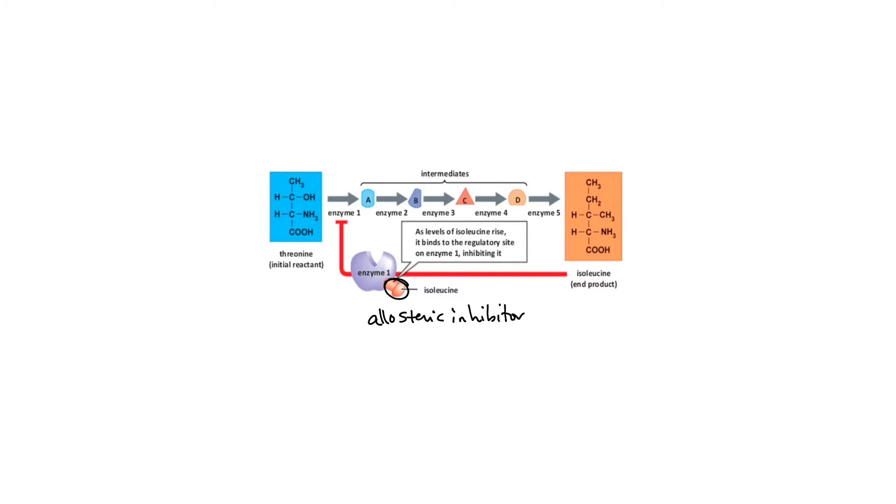So, when there's sufficient isoleucine that has been produced by this pathway, it can come back and act on enzyme one, so that now threonine won't be able to be turned into the intermediate A. Since isoleucine is an end product of this pathway, we actually call this feedback inhibition. So, it's not just allosteric inhibition, it's allosteric feedback inhibition. Isoleucine is feeding back on the activity of enzyme one. So, this is negative regulation of this pathway, feedback inhibition.